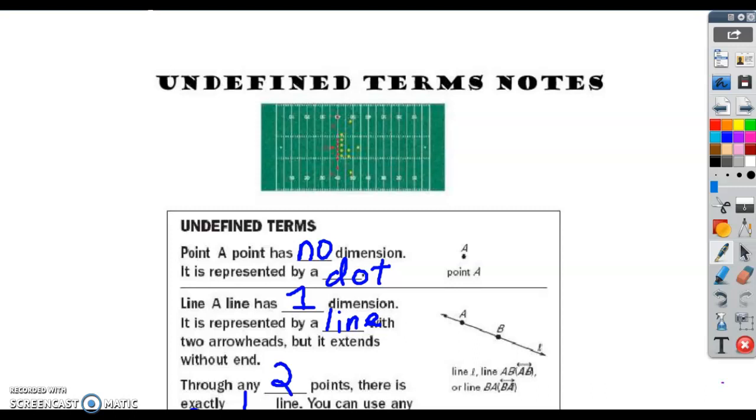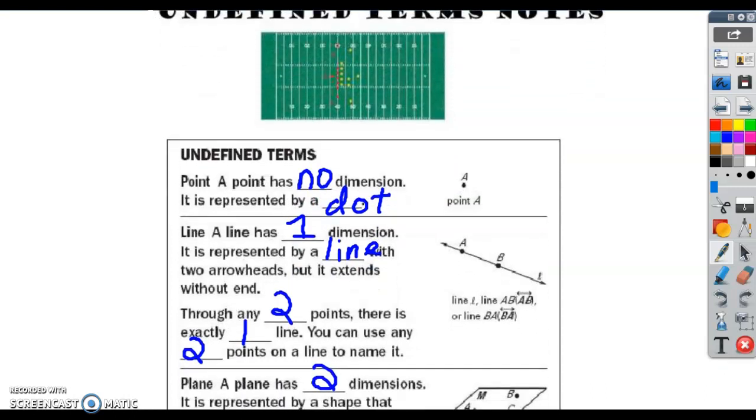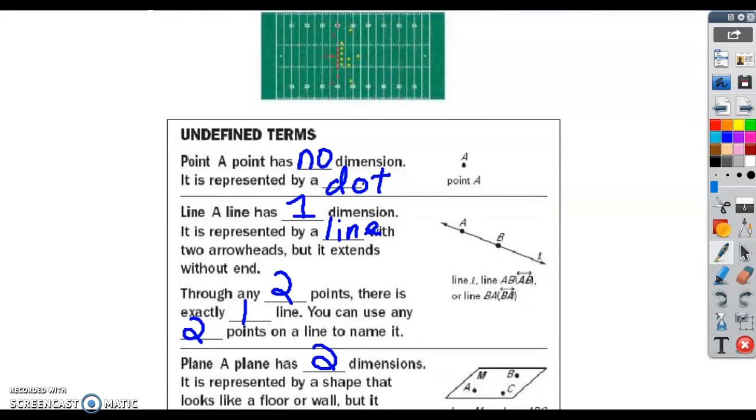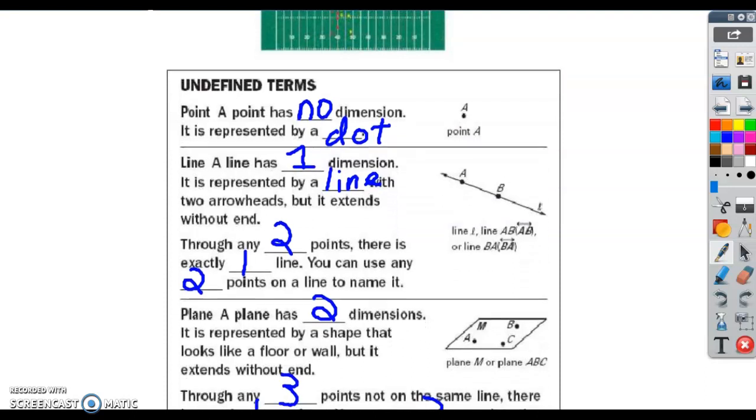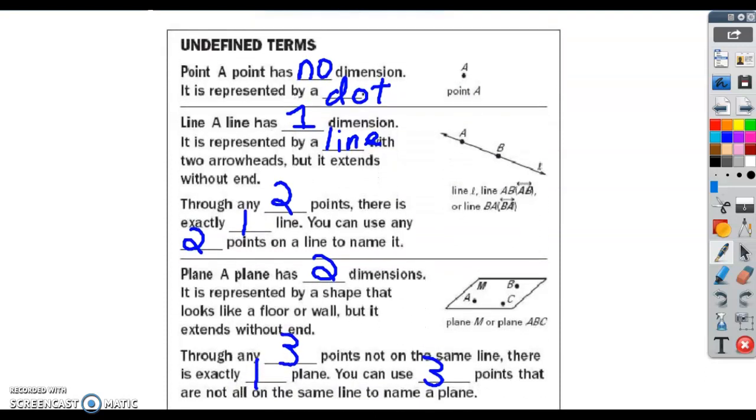You guys can write this down on paper if you have them printed, or you can just watch and do practice in class. It's up to you. So a point has no dimension, and it's represented by a dot. See here we've got a capital A next to the dot? So here is a point, and we just call it A or B, but it's always a capital letter.